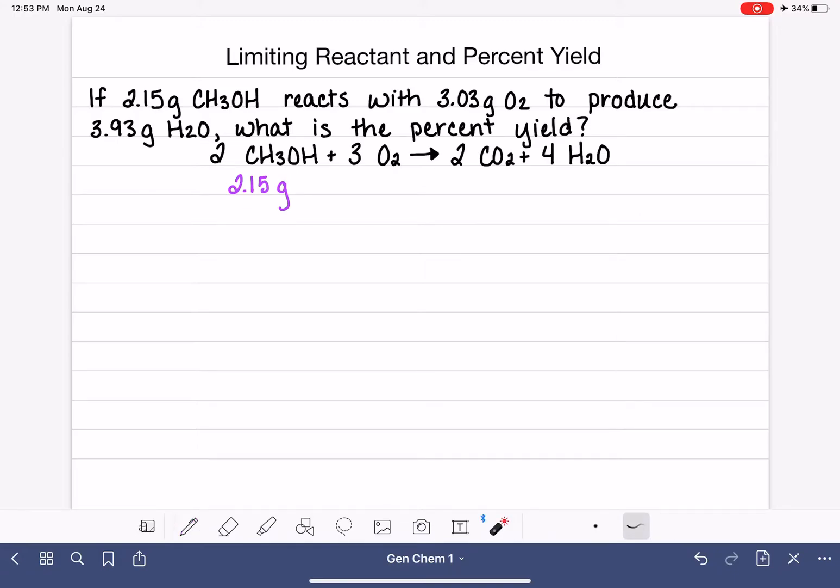And we're reacting that with 3.03 grams of oxygen gas, so we'll put that right here, 3.03 grams. And it's telling us that we are producing 3.93 grams of water, 3.93 grams.